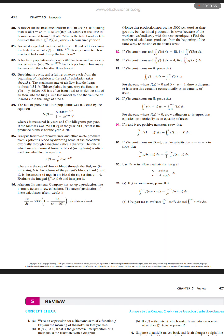A model for the basal metabolic rate in kilocalories per hour of a young man is R(t) equals 85 minus 0.18 cosine pi t over 12, where t is the time in hours measured from 5 a.m. What is the total basal metabolism of this man, the integral from 0 to 24 R(t) dt over a 24-hour period?